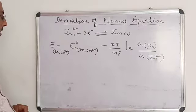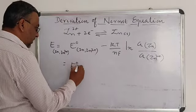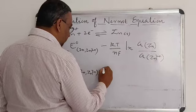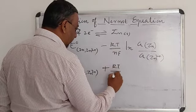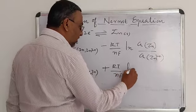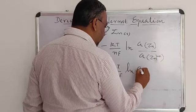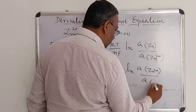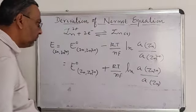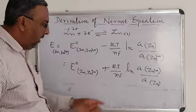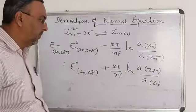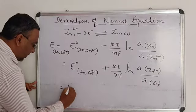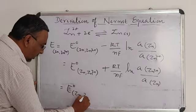The expression continues: ln of activity of Zn divided by activity of Zn²⁺. Or we can write this equation as E°(Zn²⁺/Zn) plus RT/NF into ln of activity of Zn²⁺ divided by activity of Zn.